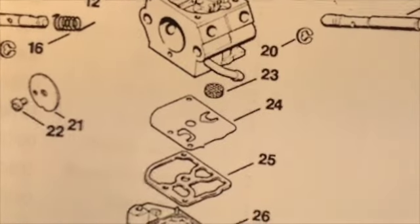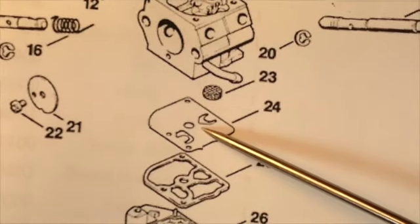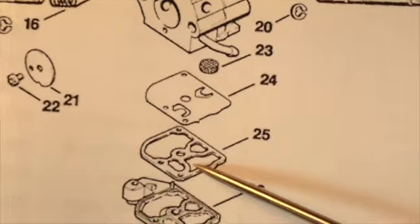Here we've got the diagram to illustrate. Here's the carburetor body, the pump diaphragm, then the gasket, then the cover plate.